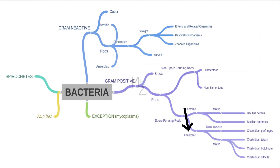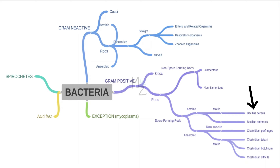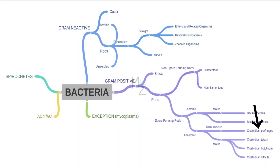Spore forming rods are further classified into motile and non-motile. The motile aerobic rod is Bacillus cereus and the non-motile aerobic rod is Bacillus anthracis. The non-motile anaerobic rod is Clostridium perfringens, and the motile anaerobic rods are Clostridium tetani, Clostridium botulinum, and Clostridium difficile.